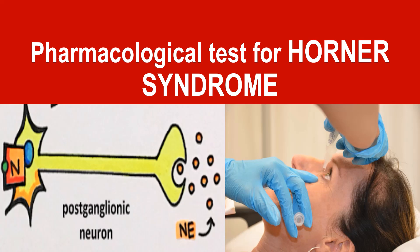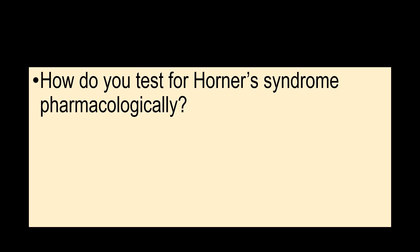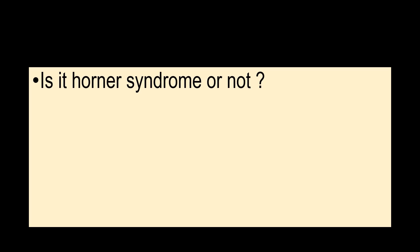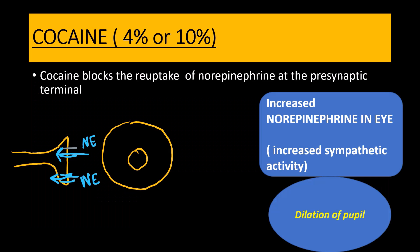Welcome to Insight of Thermology. This is Dr. Amrit welcoming you to another important lecture. Today we are studying how to diagnose Horner syndrome using certain pharmacological tests. The lecture aims to tell you how to test for Horner syndrome pharmacologically. Basically, to confirm whether it is Horner syndrome or not, we have two sets of drugs: cocaine and apraclonidine. Once diagnosed, the next task is to localize the lesion — whether it is first order, second order, or third order Horner syndrome.